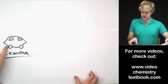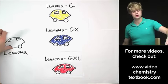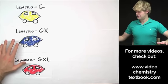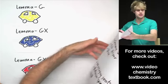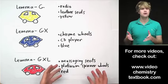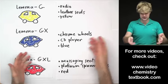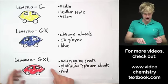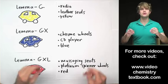Now the Lamona comes in three different models. There's the Lamona G, the Lamona GX, and the Lamona GXL. They're all different colors as you can see but each of these models also has unique features. One has a radio and leather seats. The GX here has chrome wheels and a CD player, it's blue. The red GXL has massaging seats, platinum spinner wheels and everything.